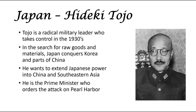On the other side of the world, in Japan, we have Hideki Tojo, who rises. They still have an emperor in Japan, but Tojo is one of the radical military leaders who takes control and becomes prime minister eventually. In their search for raw goods and materials, Japan conquers Korea and part of China. He wants to extend Japanese power into China and all of southeastern Asia in order to get raw goods and materials and expand the military power of Japan. He is the prime minister who orders the attack on Pearl Harbor.